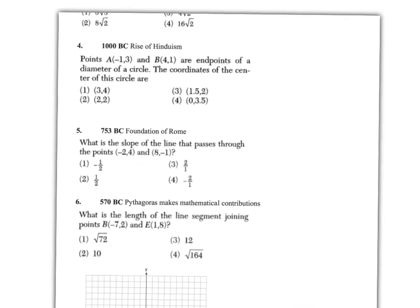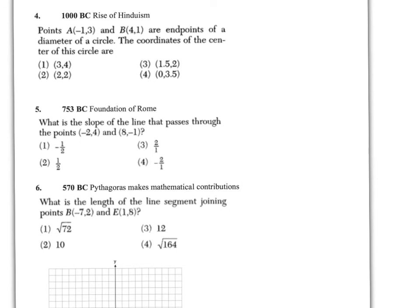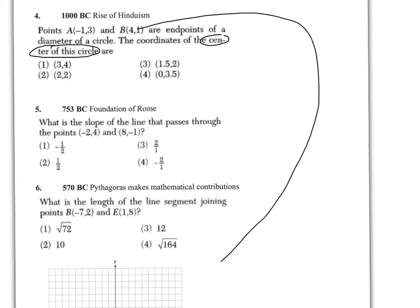Moving on to question four — 1000 BC, we've got the rise of Hinduism. This is a question involving finding the center of a circle, and this one can be done pretty easily by using the grid at the very bottom of the page. You could also find the midpoint by connecting these two points together. Remember the midpoint formula: you take the average of the x's and you take the average of the y's. I would probably just use that formula versus using the picture, but use both to be on the safe side.